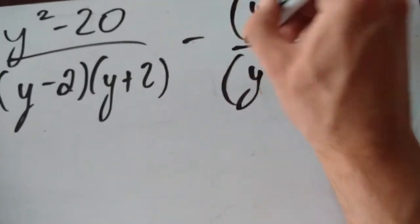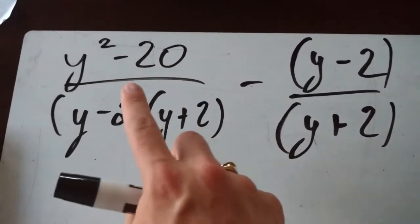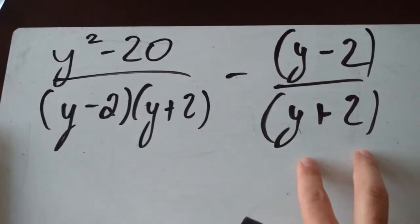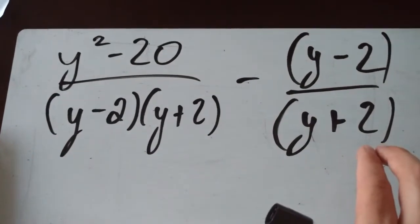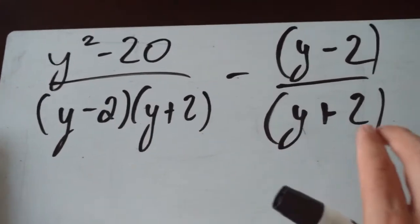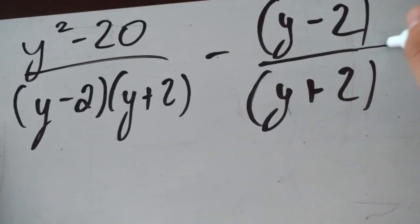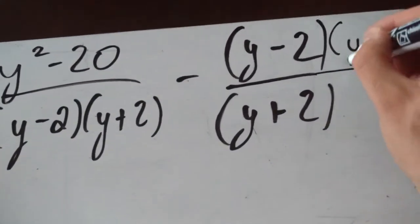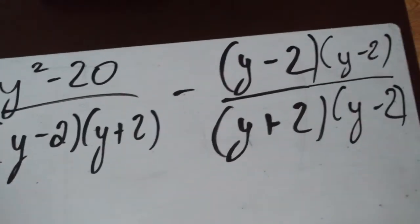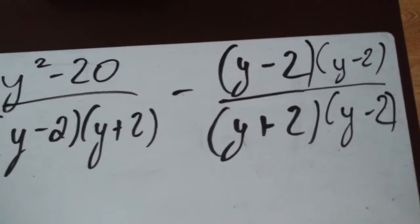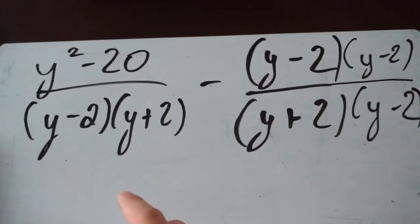In order to subtract these two things together, the second fraction is going to need a (y minus 2) attached to it. It already has a (y plus 2), but it needs a (y minus 2). So we grow it by multiplying by (y minus 2) on the top and on the bottom — as long as you put it on both, it doesn't change anything. Now we can actually subtract straight across.